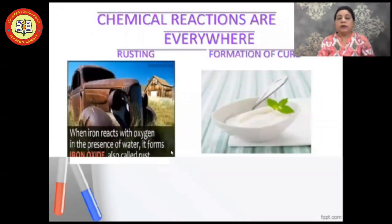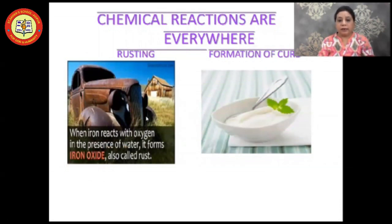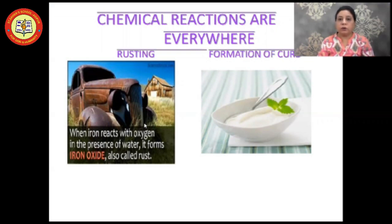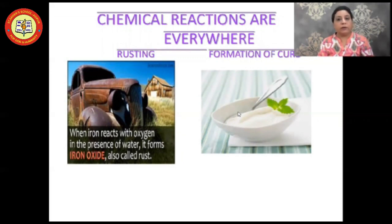Another example is rusting. When iron reacts with oxygen in the presence of water, it forms iron oxide, and this oxide of iron is known as rust. During the rainy season, many iron tools develop a reddish outer covering — that layer is nothing but rust, which is iron oxide. Another example is the formation of curd from milk; the conversion of milk into curd is a chemical reaction.